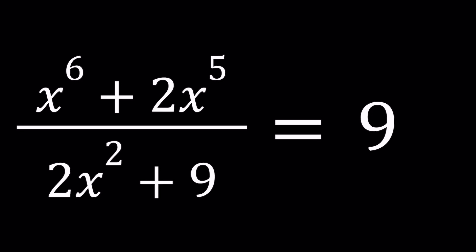Hello everyone. In this video we're going to be solving a nice rational equation. We have x to the 6th power plus 2x to the 5th divided by 2x squared plus 9 and it's equal to 9.